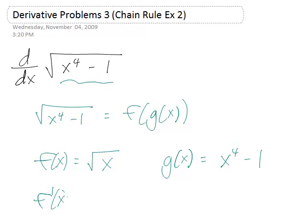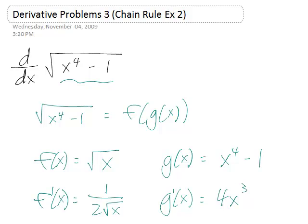Taking the derivatives, we have f prime: the derivative of a square root is 1 over 2 times the square root. And g prime, using the power rule, gives us 4x cubed. Minus 1 doesn't do anything, so that would give us 0.